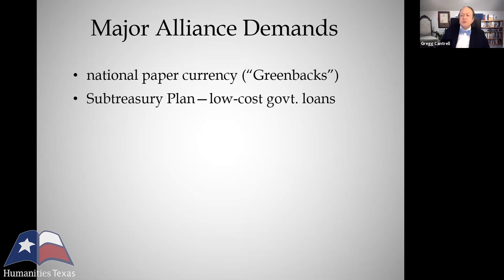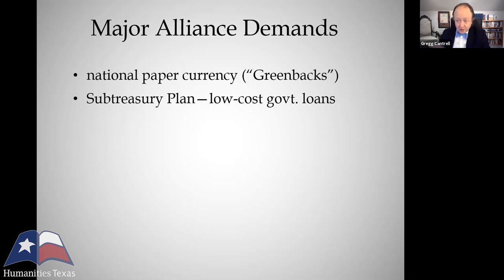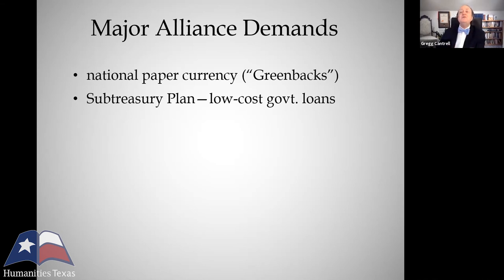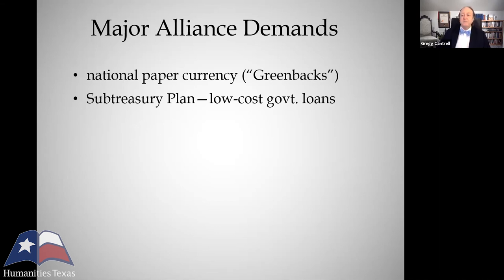Another major Alliance demand was something they called the sub-treasury plan — an innovative system that called for the federal government to build a network of warehouses and grain elevators all over the agricultural parts of the nation, where at harvest time farmers could come and deposit their crops temporarily, and the government would then issue them a low-cost government loan at 2% interest instead of 20, 30, or 40%. This, of course, would require a major expansion of federal government power.